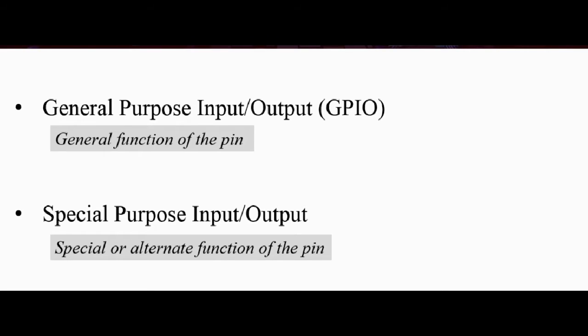And the same for the ADC. We have to configure the particular pin where the sensor is connected to act as an analog pin. Otherwise, in its default state or in its general state, it's a general purpose input-output pin. So this is what we mean when we say general purpose input-output and special purpose input-output. And you understand this further when we start configuring our various peripherals.